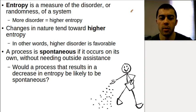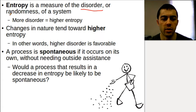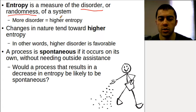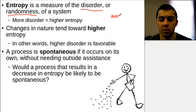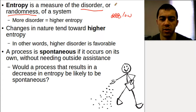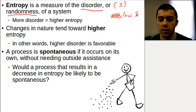In this chemistry video we're going to talk about entropy. Entropy is a measure of the disorder or randomness of a system. If we have some rigidly arranged molecules, this would be very ordered — this would be low entropy. The abbreviation for entropy is S, so this would be low S.